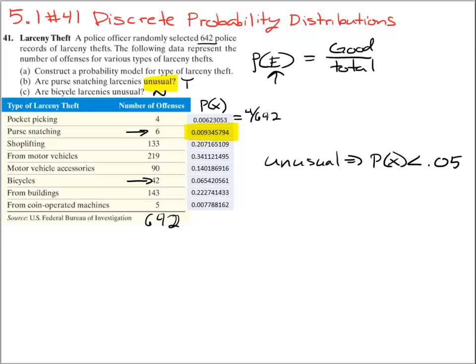So all we are doing is creating simple probabilities by dividing the number by the total, and then determining whether or not they are unusual based on that threshold.